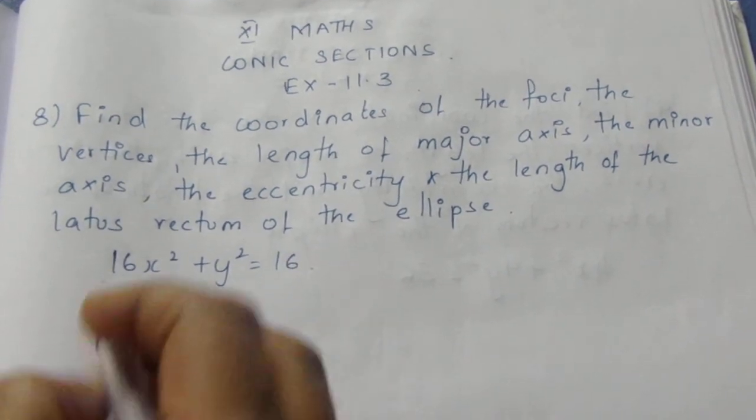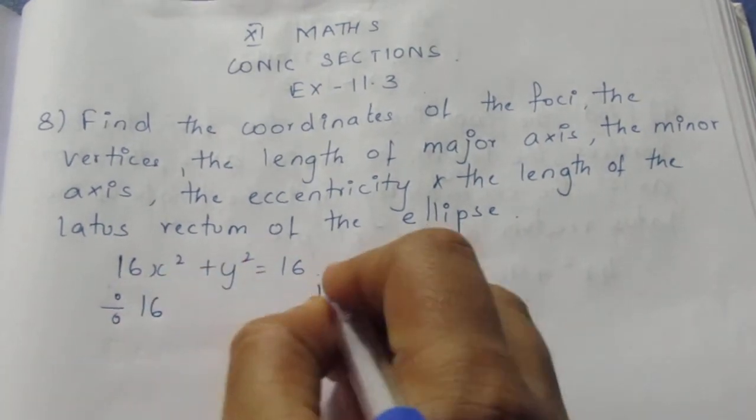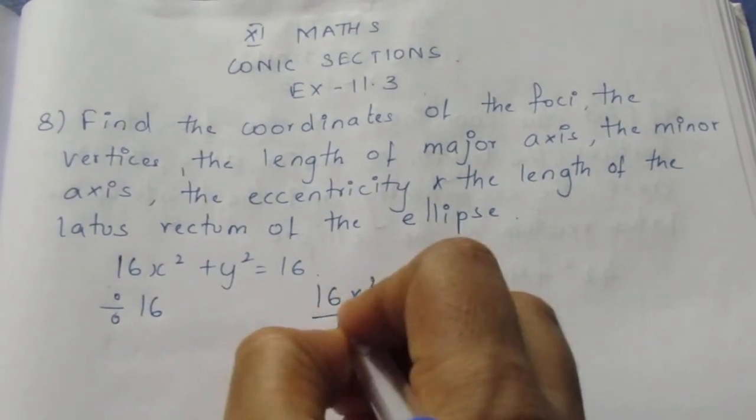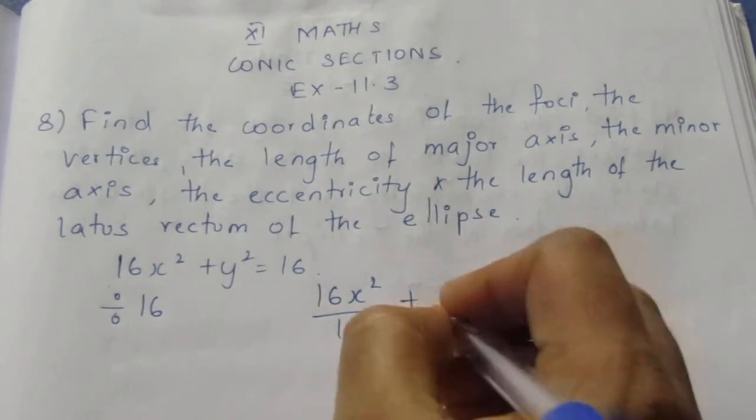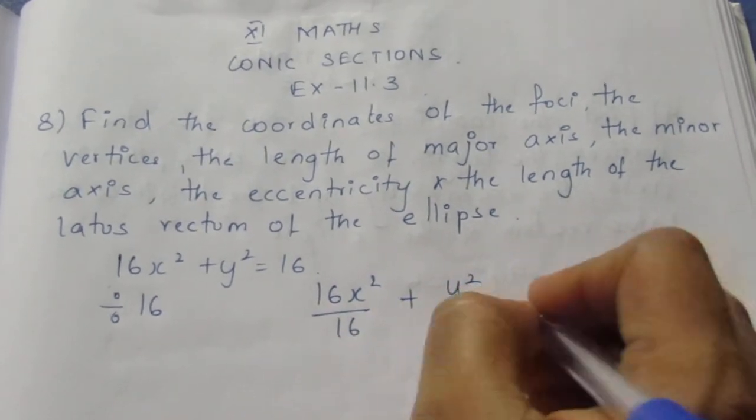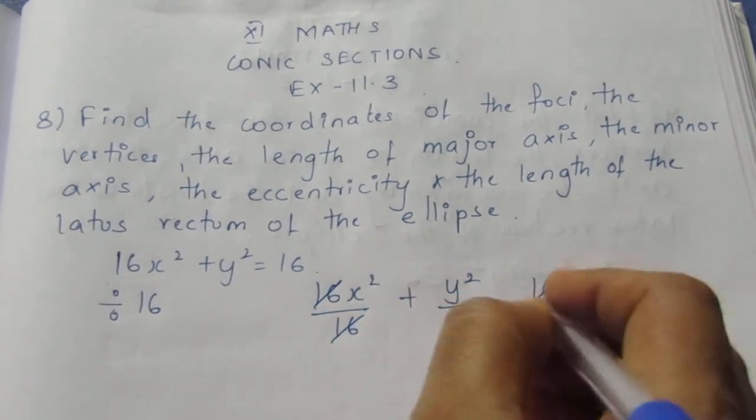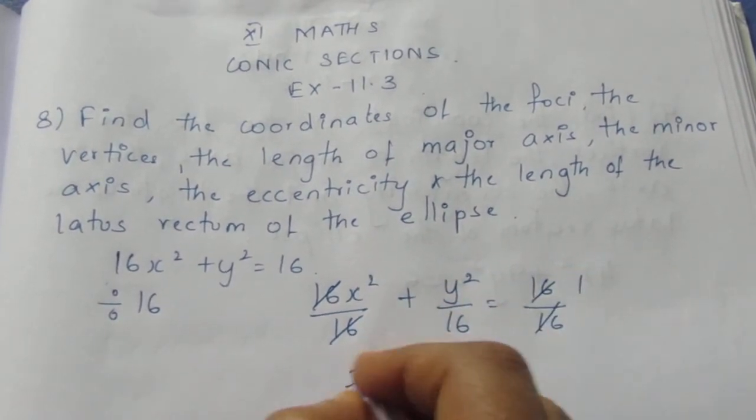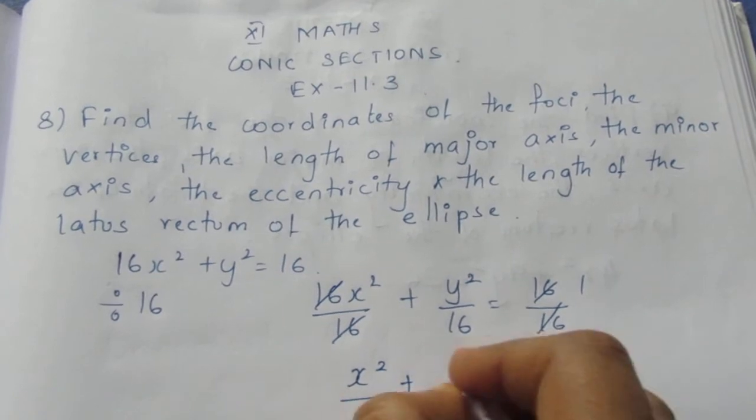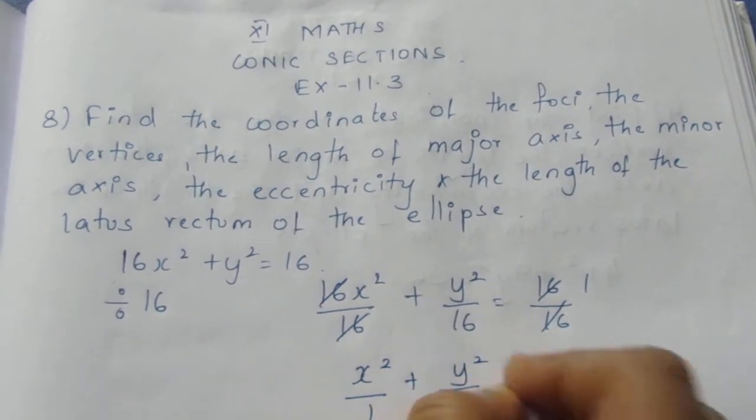Here we have 16, so I am dividing everything by 16. It becomes 16x²/16 + y²/16 = 16/16. Now this gets cancelled. It becomes x²/1 + y²/16 = 1.